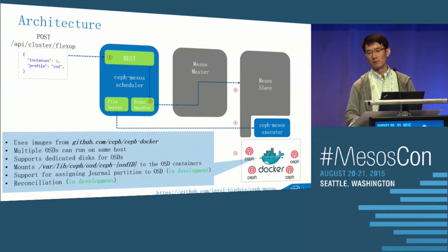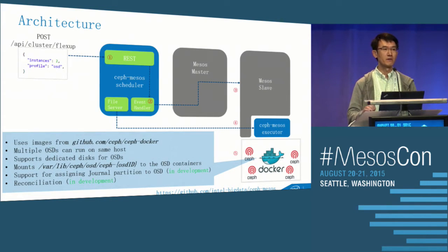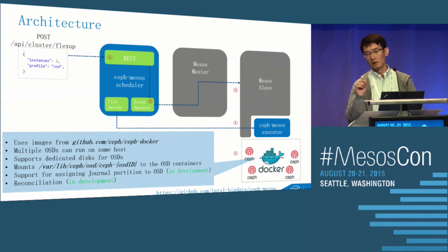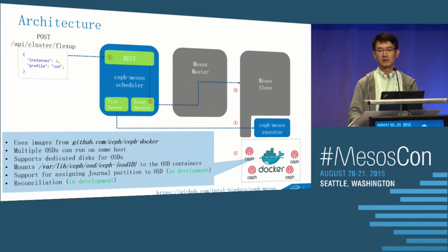In the parameters of that API, you can specify the type of instance you want to scale out. In this example, we will add two more OSD nodes to the existing cluster.